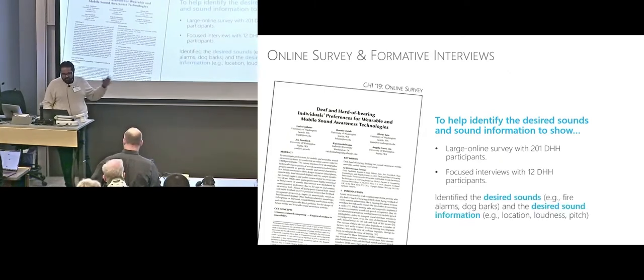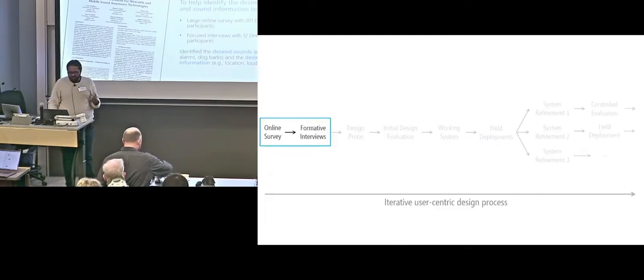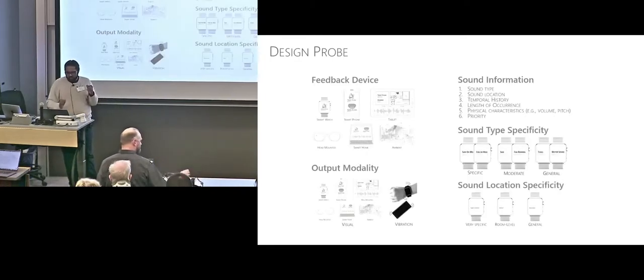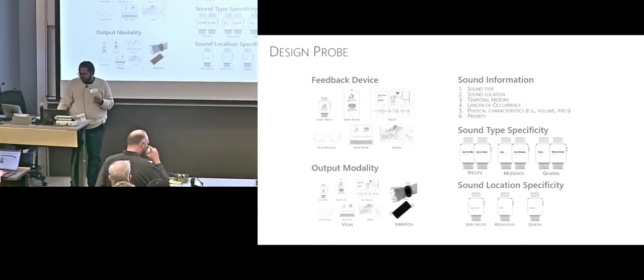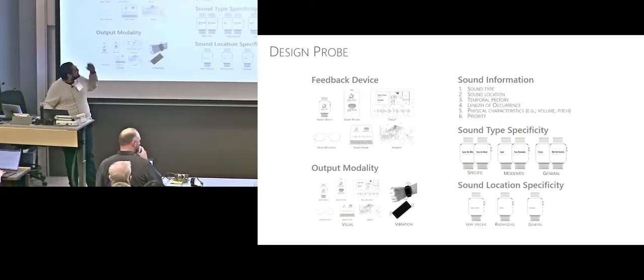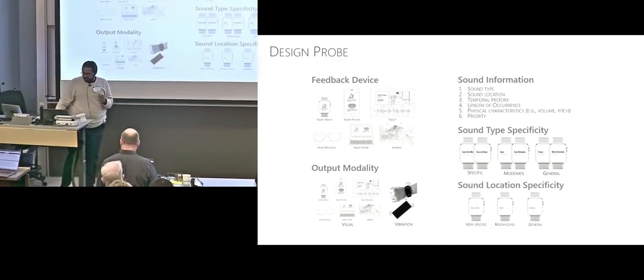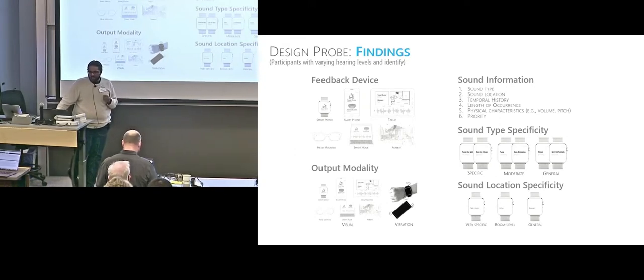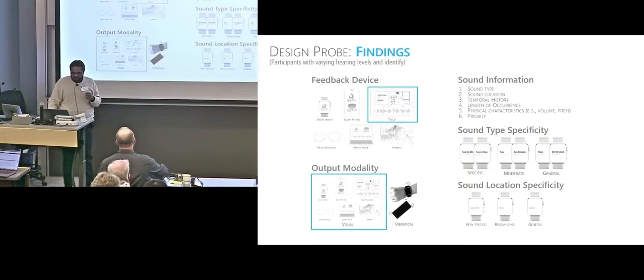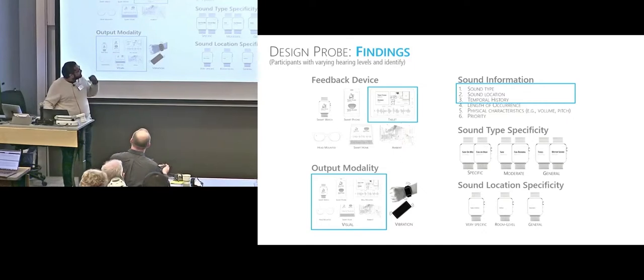Once we identified the kind of information people wanted, we needed to show it to users. To explore what interfaces would work, we conducted a design probe — getting different design options and asking participants to choose which they prefer. Based on formative results, we narrowed down to five dimensions for providing sound awareness feedback: the device for the feedback, the modality, the sound information, and so on. Participants preferred tablets as the most preferred feedback device, with visual as the preferred modality, and temporal history, location, and type as the preferred sound information dimensions.